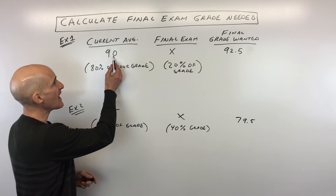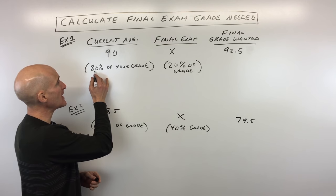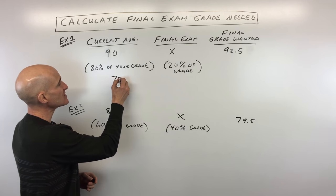We're going to take 90, what you have currently, times the percentage, 0.80. And that's going to give you 72.